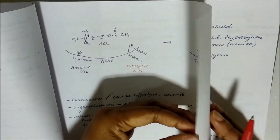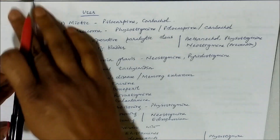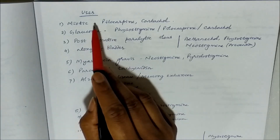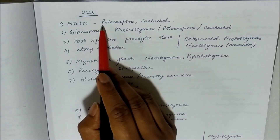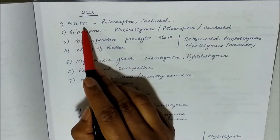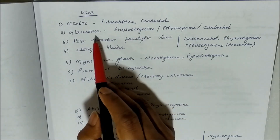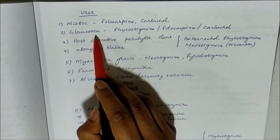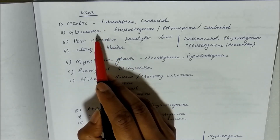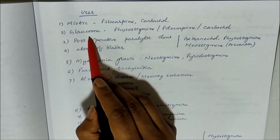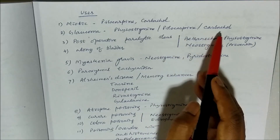Regarding the uses of these drugs: on the eye, they act on the circular smooth muscle of the iris and cause contraction, leading to miosis. They can be used as miotics - for example, pilocarpine and carbachol. They also cause ciliary muscle contraction, leading to opening of the canal of Schlemm, aqueous humor drainage, and are therefore useful in glaucoma. Drugs like physostigmine, pilocarpine, and carbachol can be used for glaucoma.